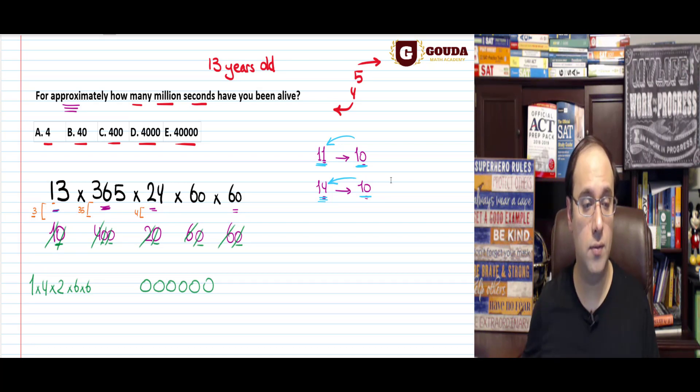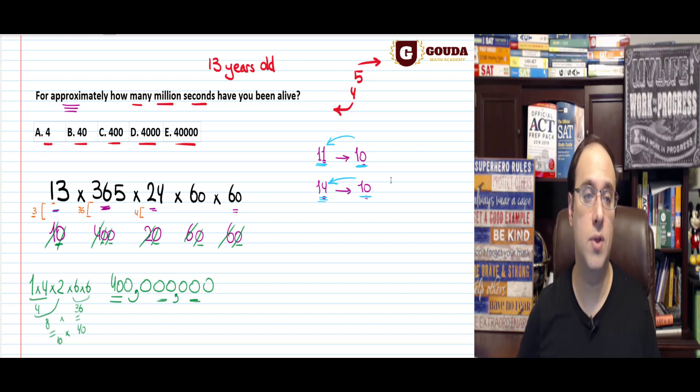1 times 4 is 4. 4 times 2 is 8. 8 times, well, 6 and 6 is 36. So it's 8 times 36. Now, can I do another rounding? Yes, you can. Is it going to be better to round 8 to 10 or 36 to 40? Doesn't really make a difference. They're both very close. Let's just do both. 10 times 40 gives you 400. 400 million. So the answer is C, 400 million seconds.